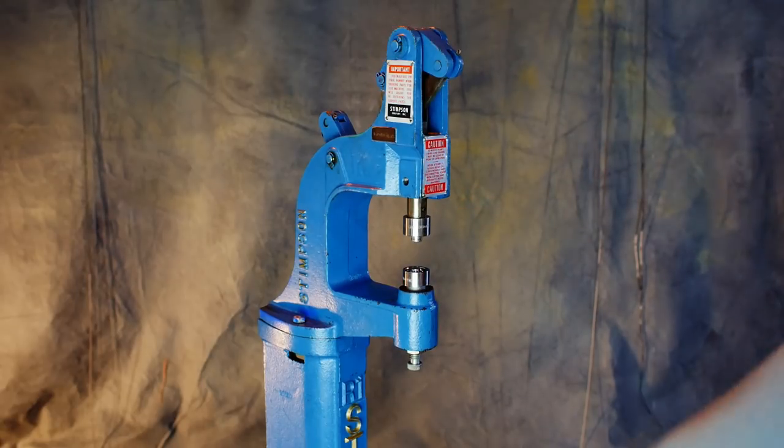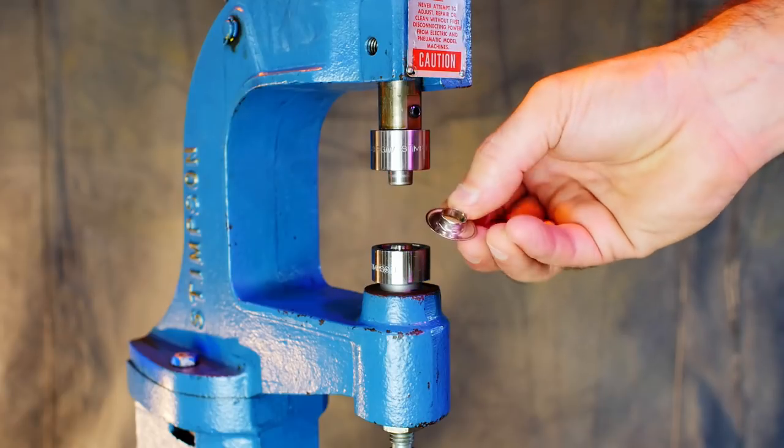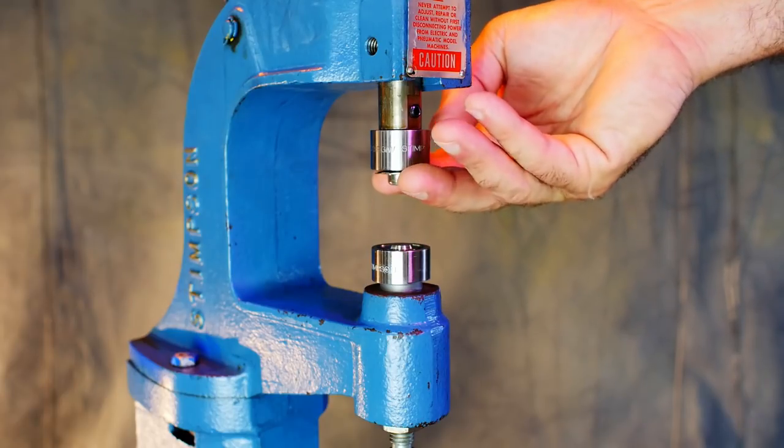Once you get all your adjustments made, you just load the two grommet pieces in. Notice how the top piece stays on the die.